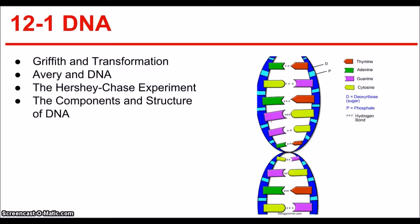There are four different nitrogenous bases. There's the purines, which have two rings in their structure, and the purines are adenine and guanine. Then there's the pyrimidines, which have one ring in their structure, and that's cytosine and thymine.